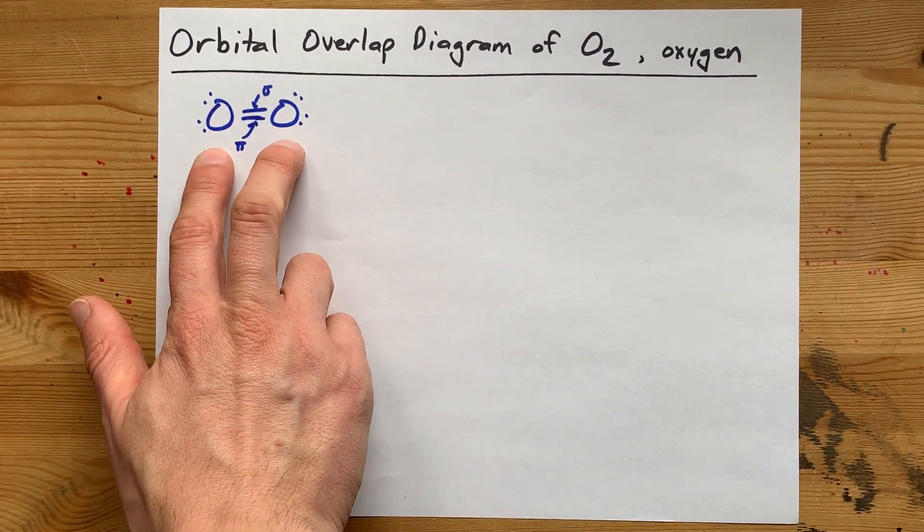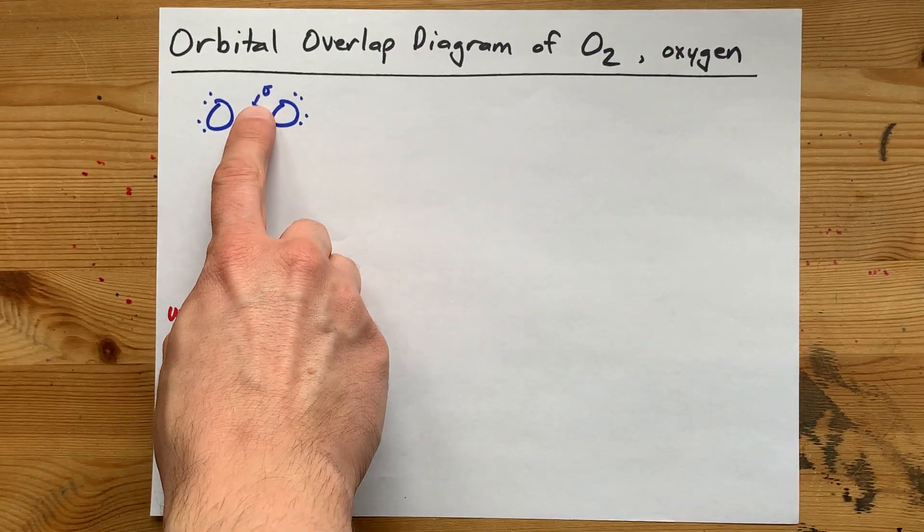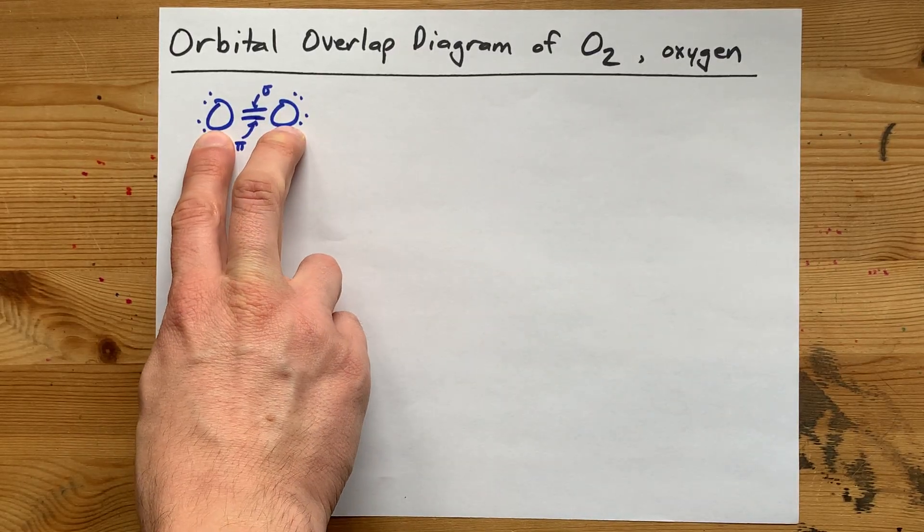The Lewis structure for O2 that satisfies the octet rule has a double bond written between the two O's.